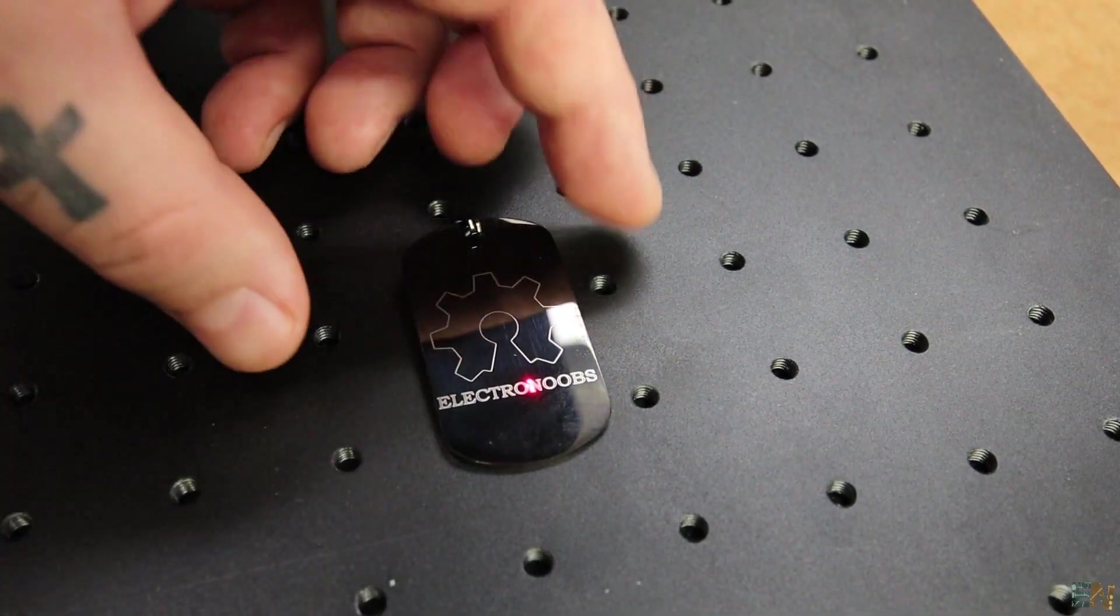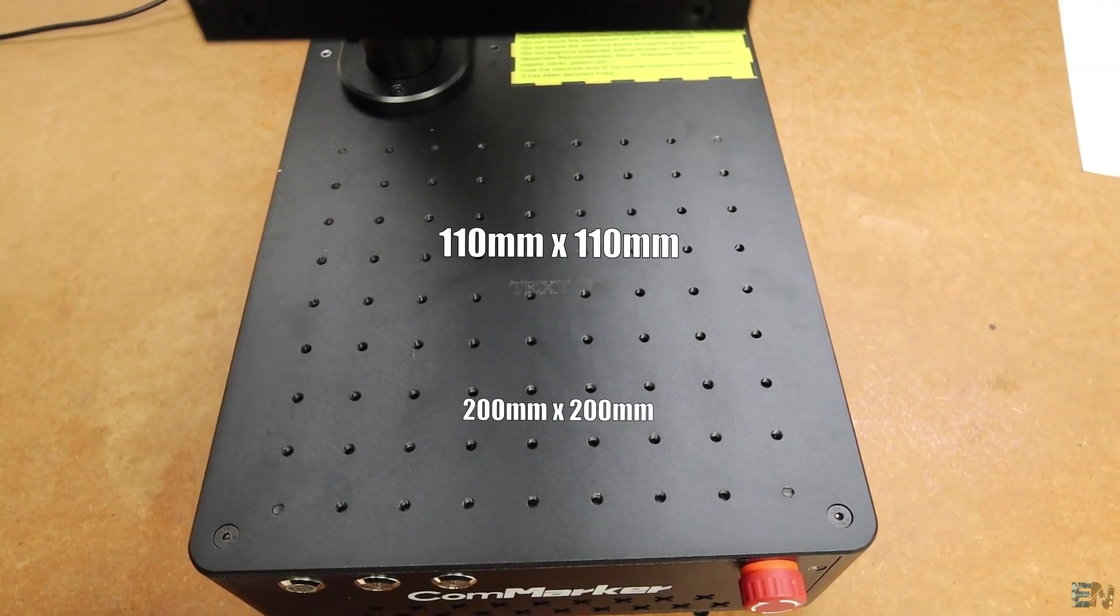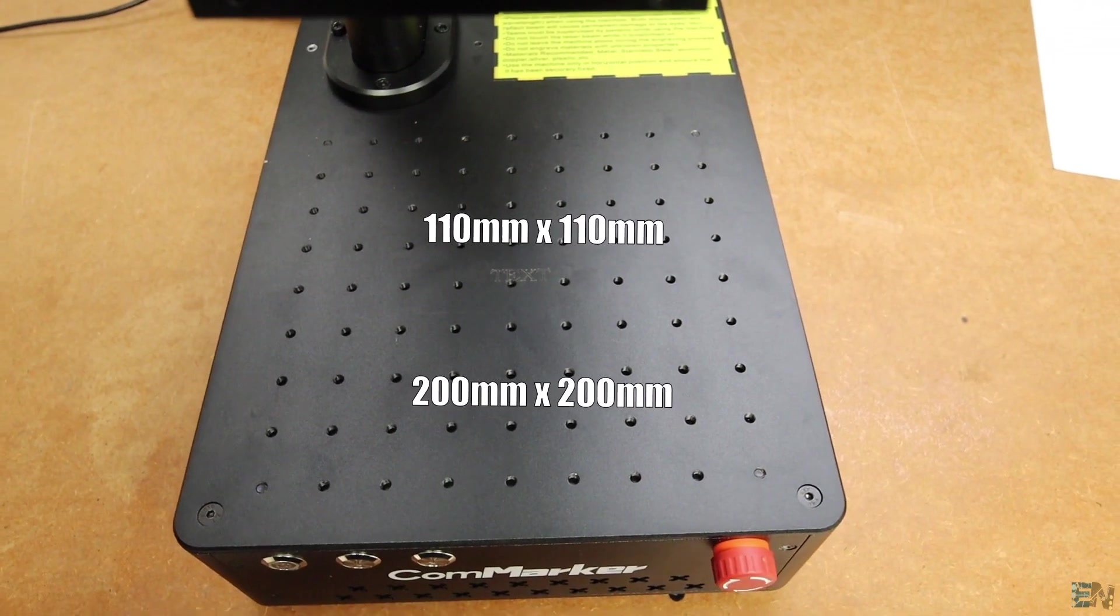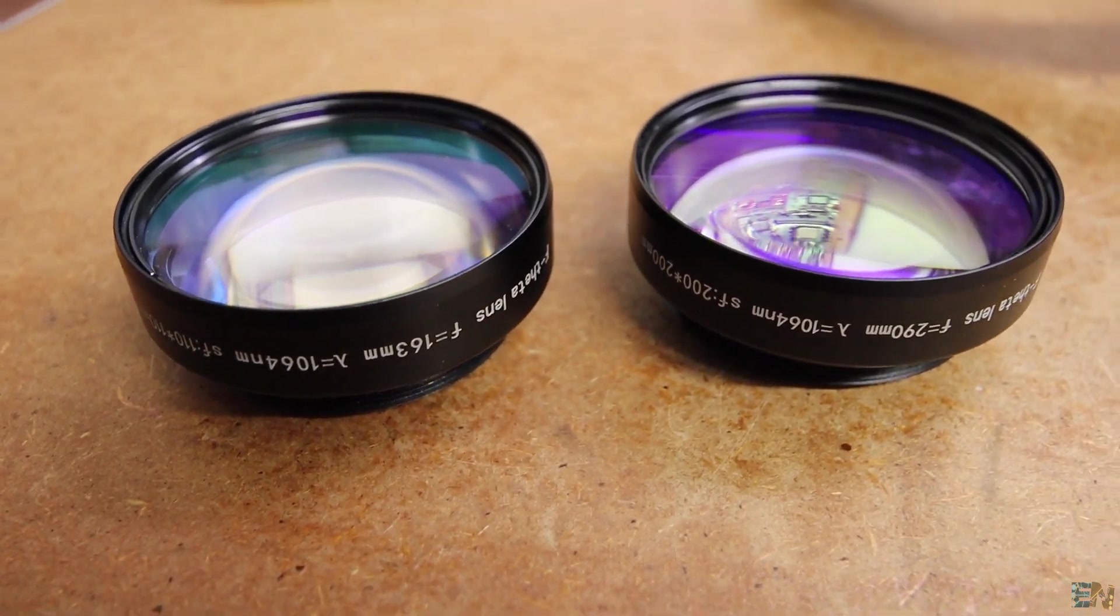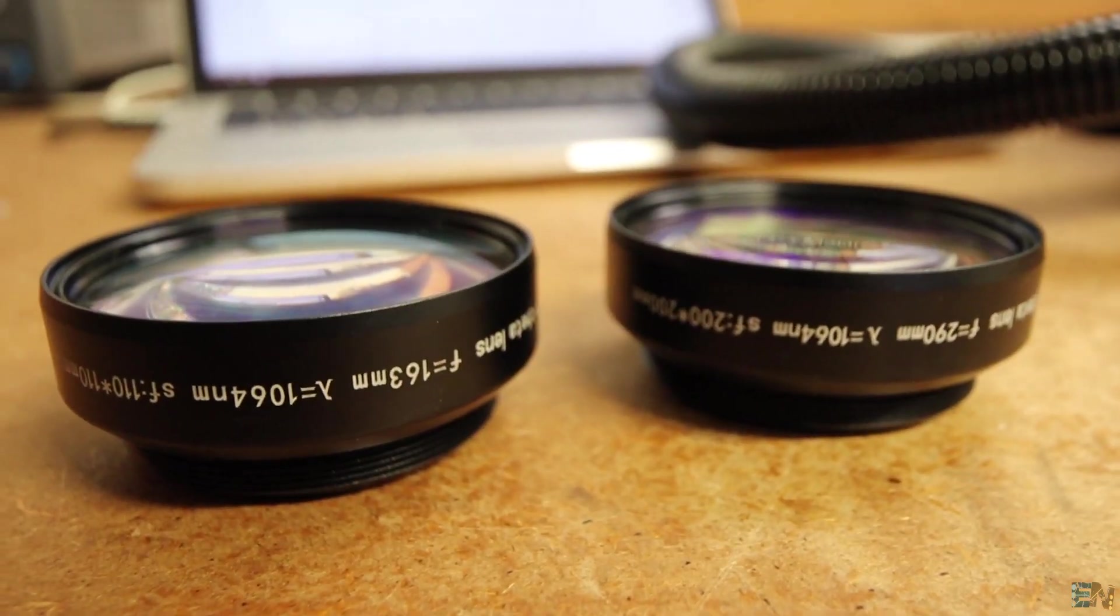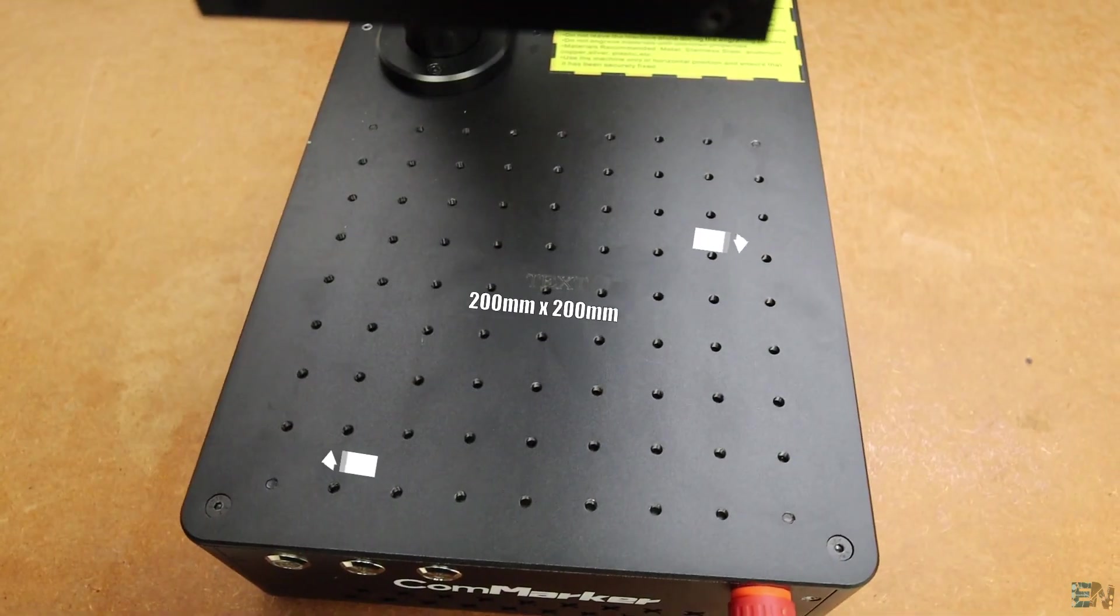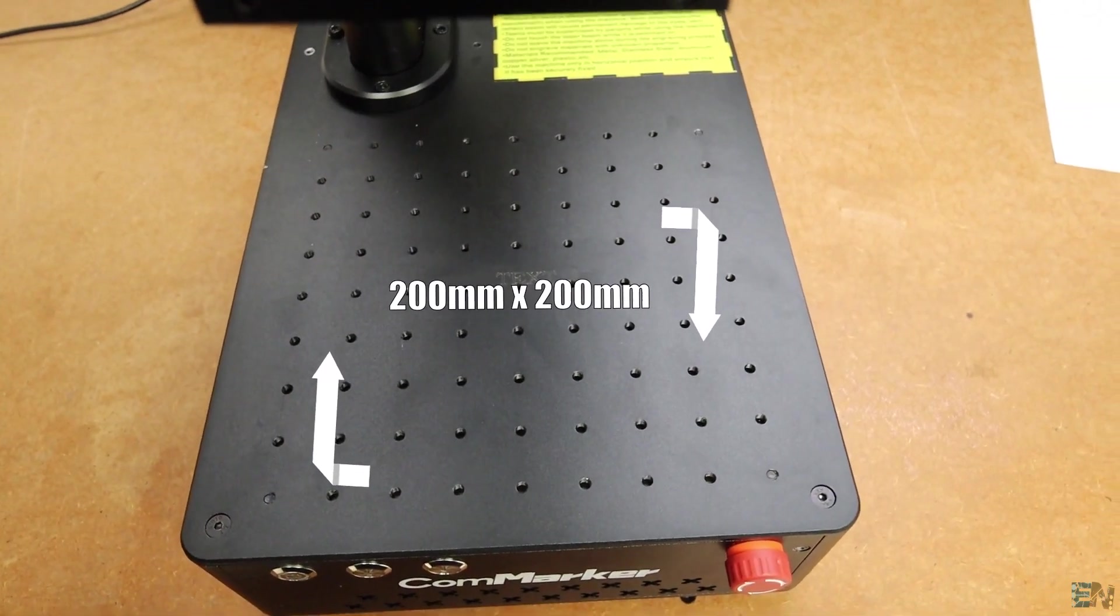As for the printing area, it could be of 110 by 110 mm or 200 by 200 mm. And that's because you get 2 lenses. If you attach the 110 mm lens, you get an area of 110 mm by 110. And with the 200 mm lens, you get the area of 200 by 200. But the difference is the resolution.